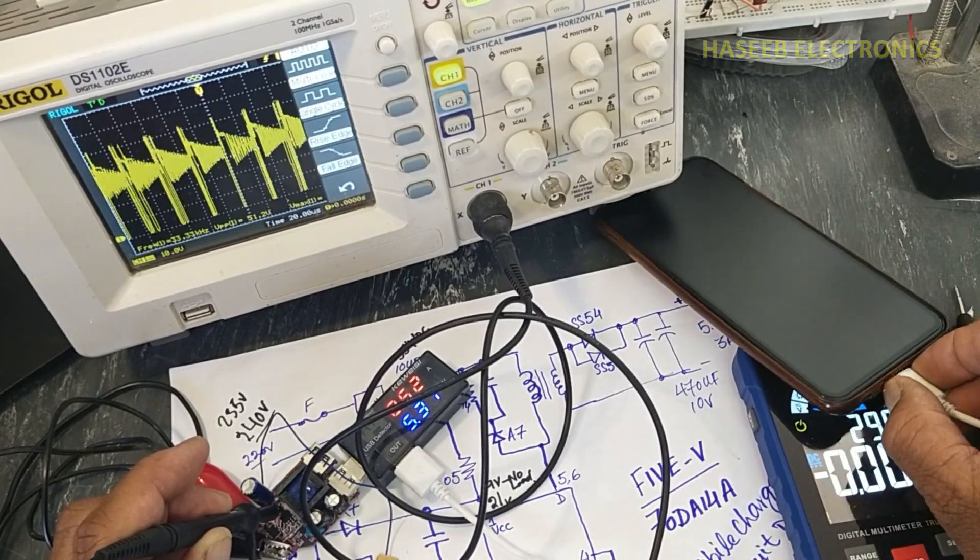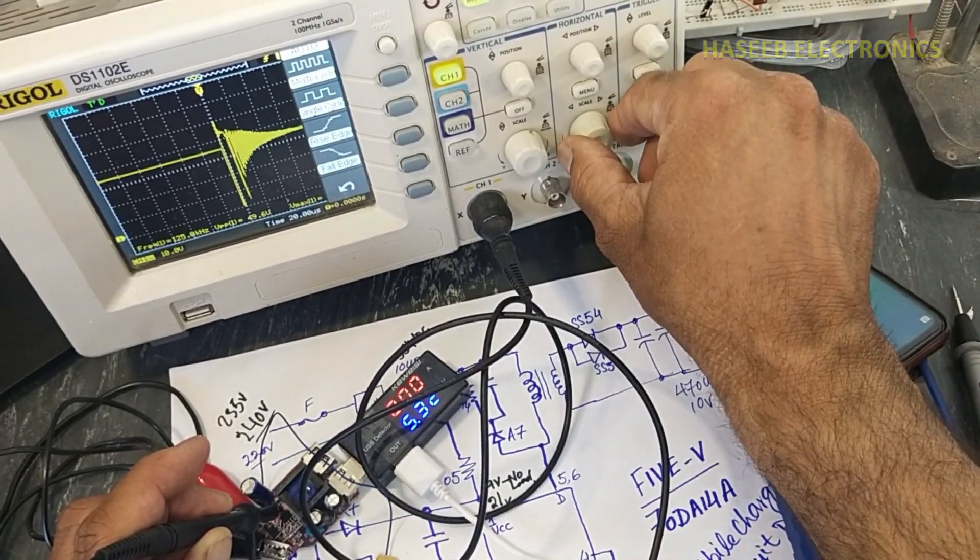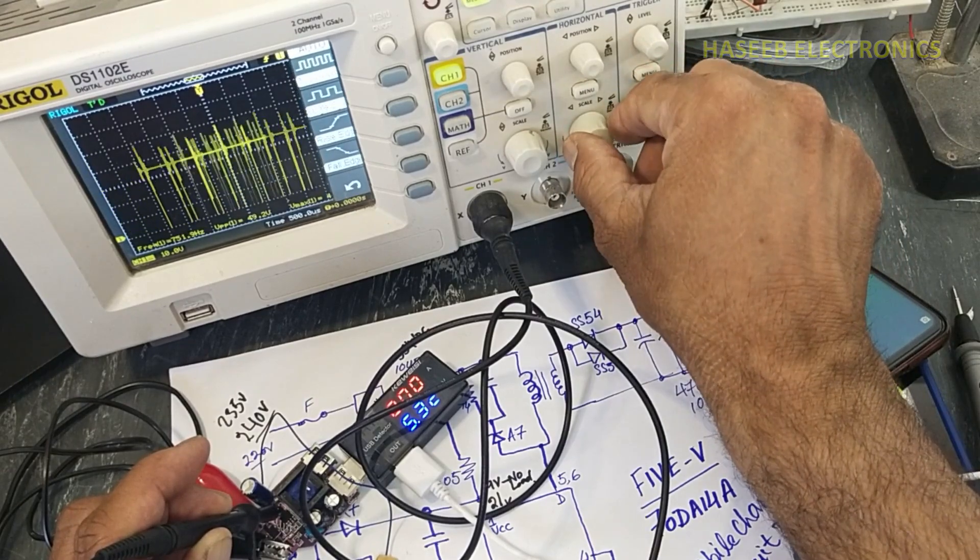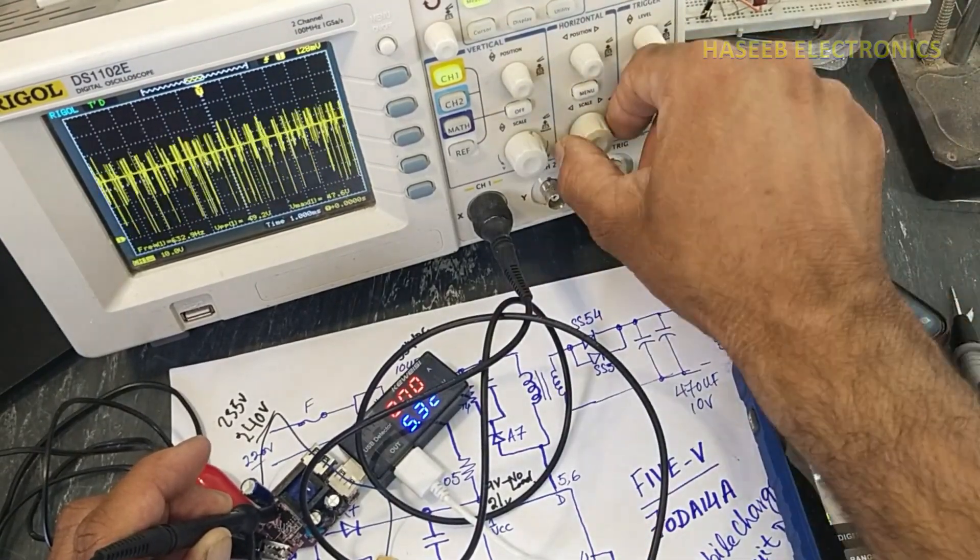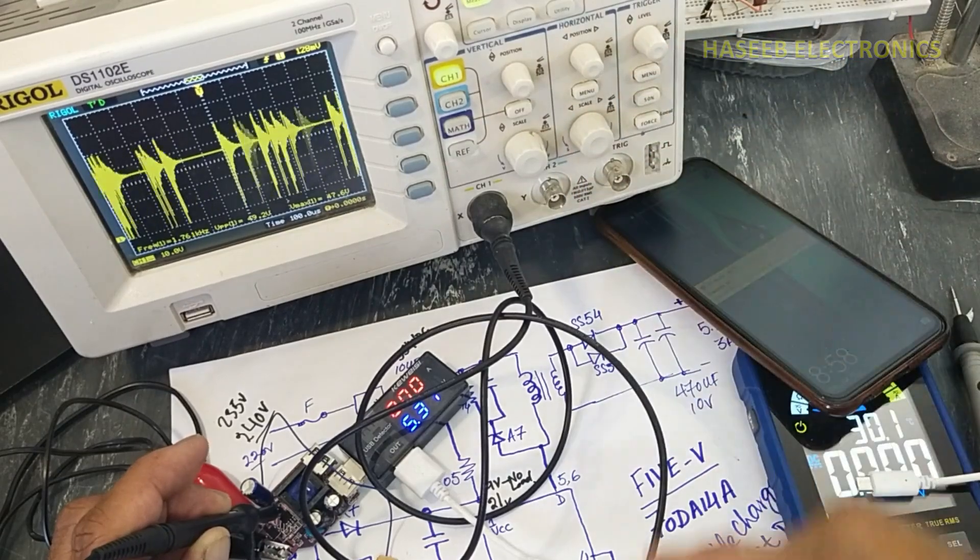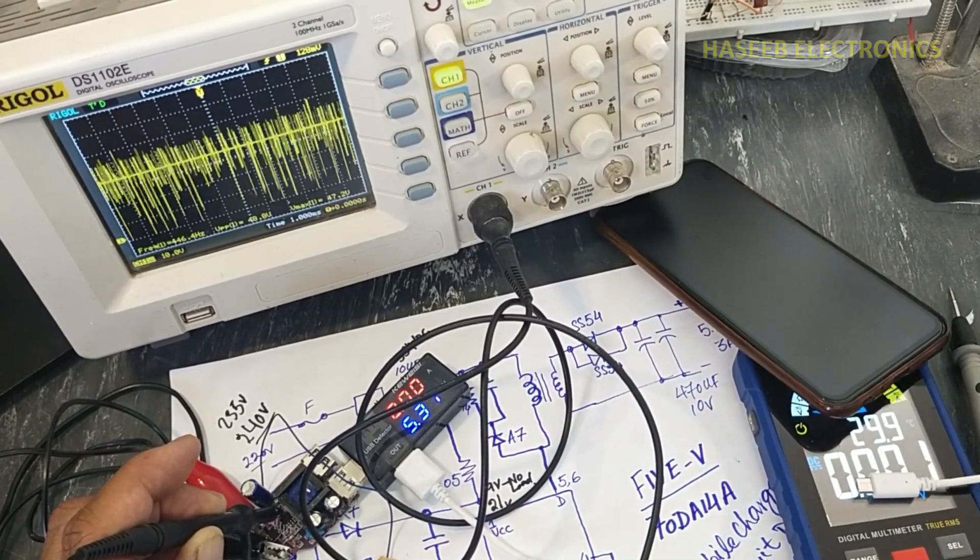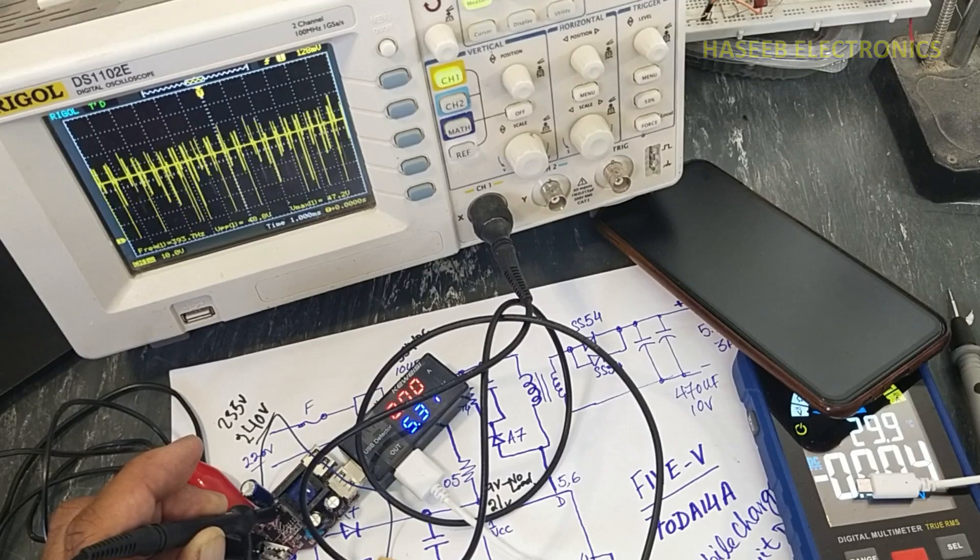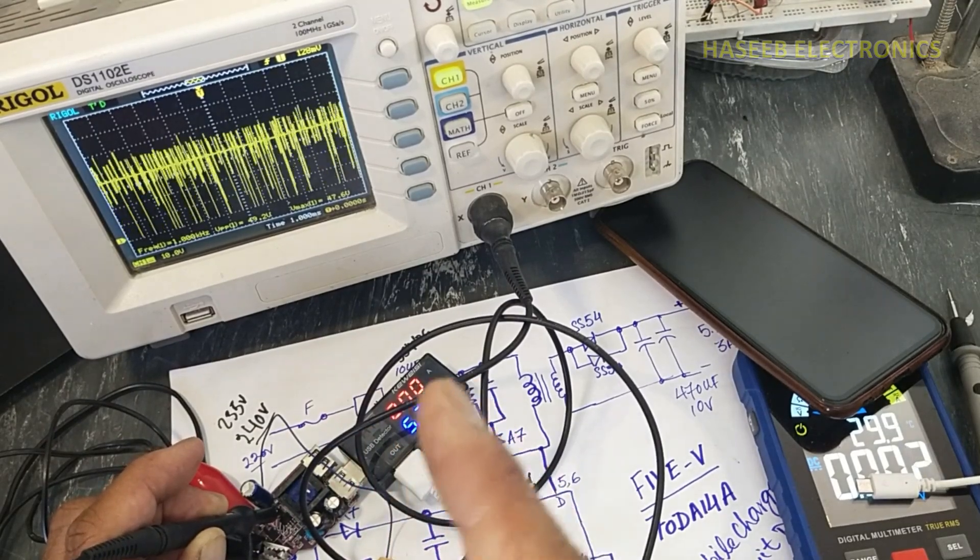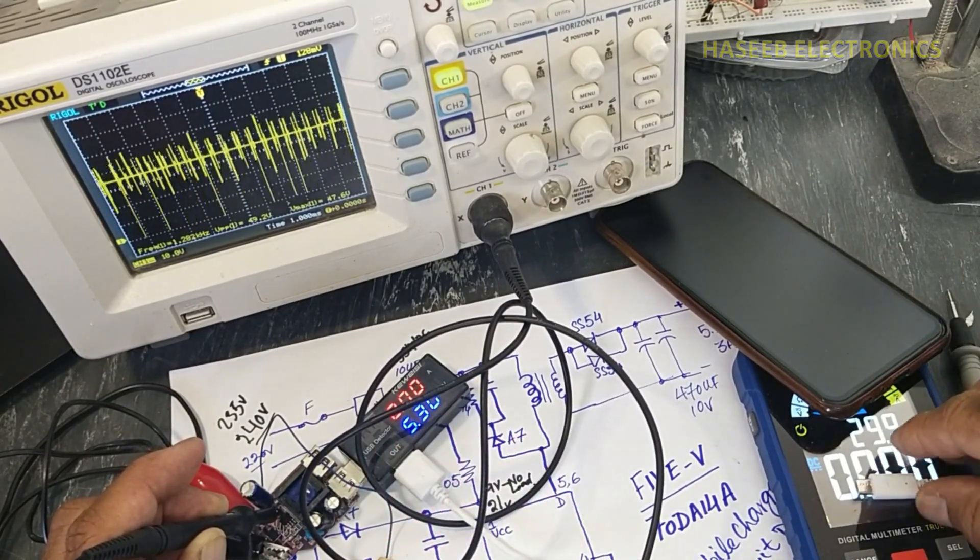If I will remove the charger, we can see this IC is now maintaining the power. Because there is no load, so it will switch one cycle and then it will wait.